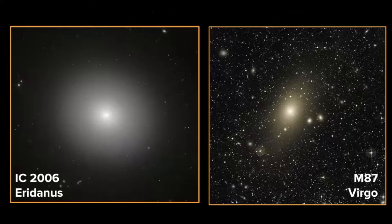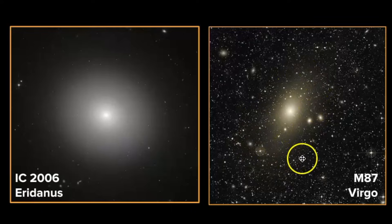So here's some examples. We have IC 2006. I think that one is really beautiful. It kind of looks like a fuzzy star, but they're just collections of millions or billions of stars. And here is M87. This one has been in the news in the past few years because we were able to capture a picture of the black hole in the center of the galaxy.